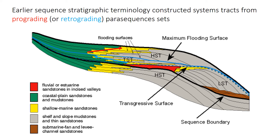Most of the disagreements focused on where to place the sequence boundary in deeper settings — for example, do we use the basal surface of forced regression below the falling stage deposits, or do we use the correlative conformity between the falling stage and the low stand deposits? Either is fine. Those surfaces haven't been discussed much because they're not really recognizable in outcrop, but they can be identified pretty readily in seismic profiles. There's no real objective way of deciding what should be your sequence boundary — there's a variety of models out there — but just be clear about what you're doing and how you're defining it.